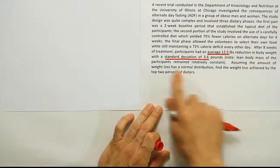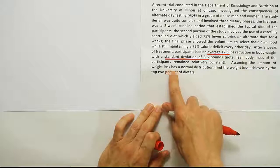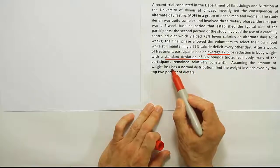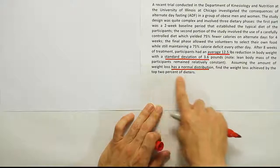Reduction in body weight with a standard deviation of 3.6 pounds. It says lean body mass of the participants remained relatively constant. Assuming the amount of weight loss has a normal distribution, find the weight loss achieved by the top 2% of dieters.